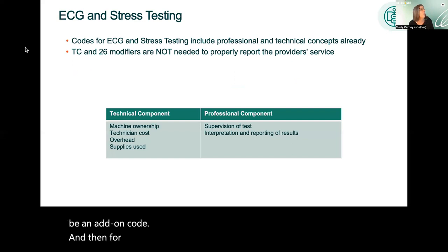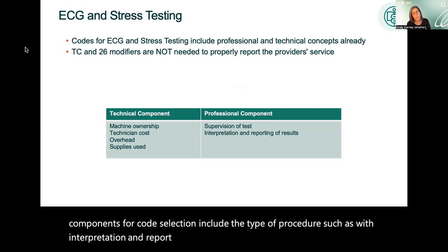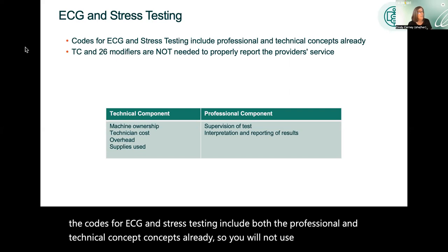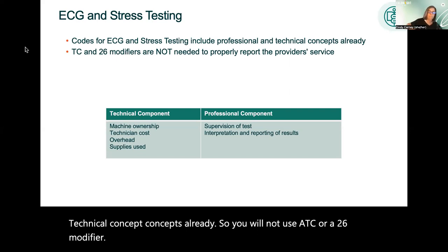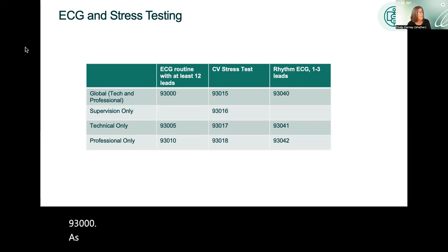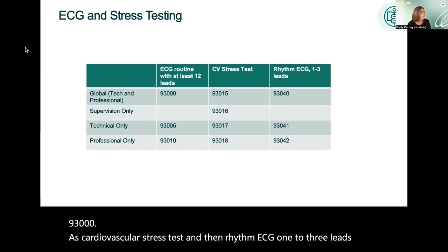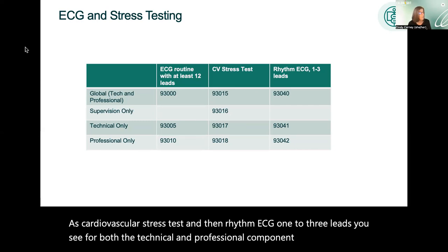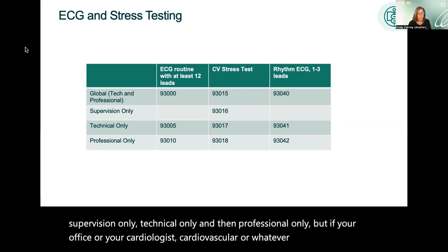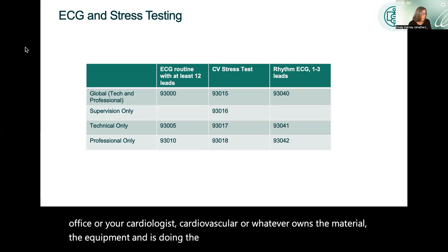For ECG or electrocardiograms and stress testing, key components for code selection include the type of procedure — with interpretation and report, tracing only, or interpretation and report only. The codes for ECG and stress testing include both the professional and technical components already, so you will not use a TC or 26 modifier. The global code 93000 covers ECG with at least 12 leads; there are also separate codes for cardiovascular stress testing and rhythm ECG with 1–3 leads. If your office owns the equipment and performs the interpretation, report code 93000.